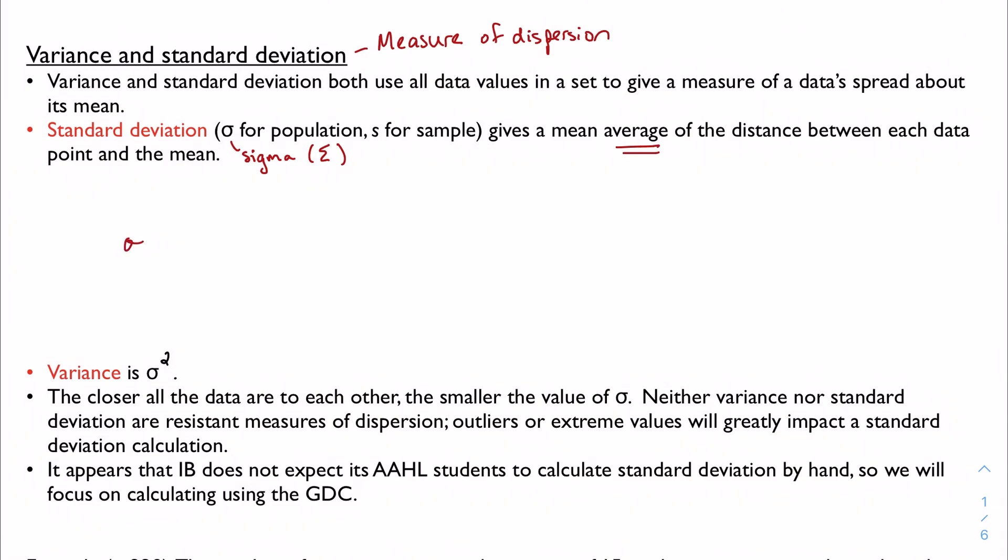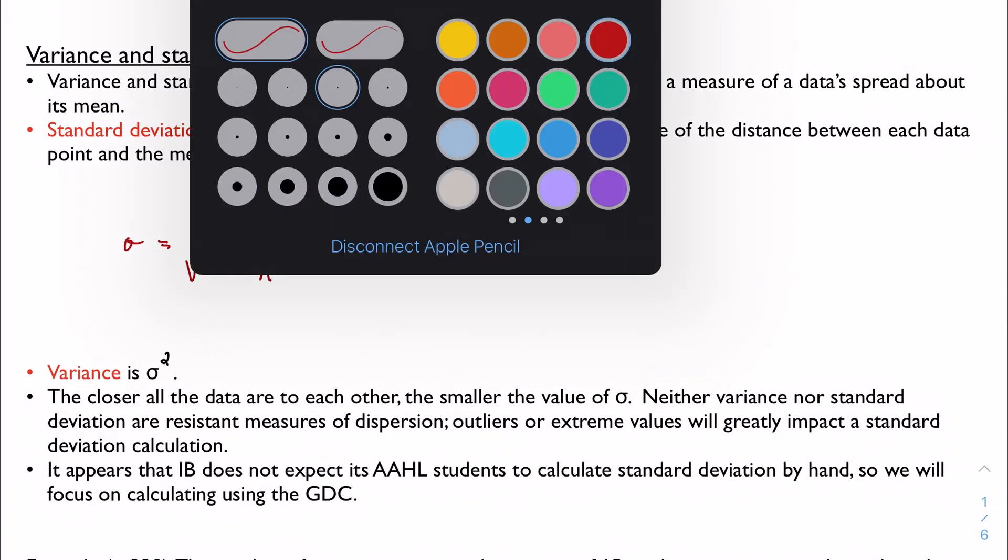And the formula that traditionally we have to use is this. It's the square root of, well think about what I'm asking for here, the distance between each data point and the mean. So I want to sum up all of the distances from each data point x sub i and the mean mu divided by the number of data points.